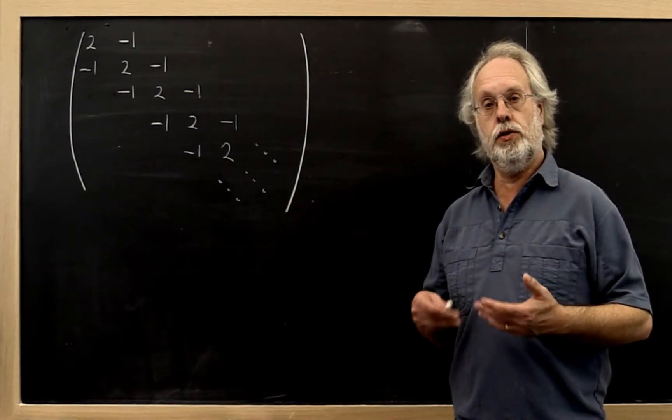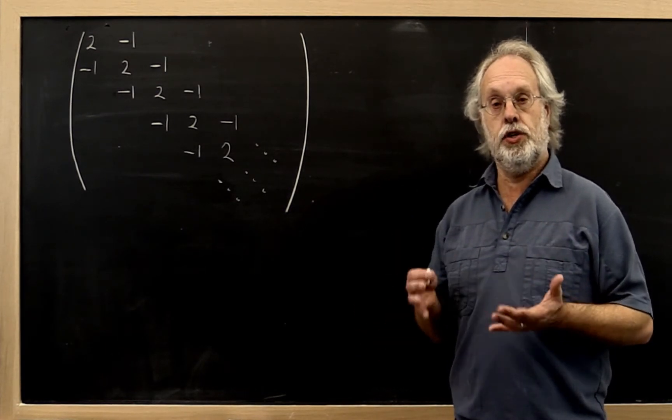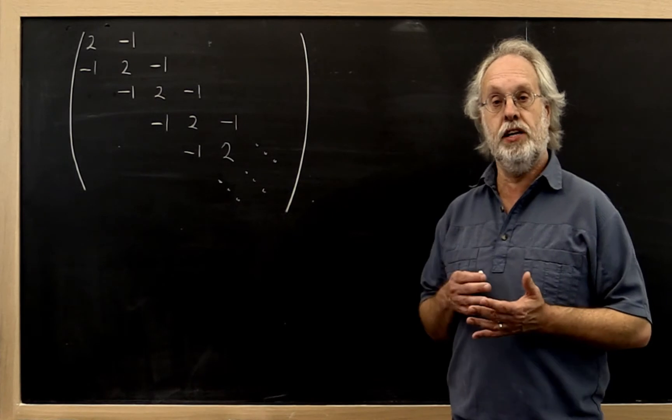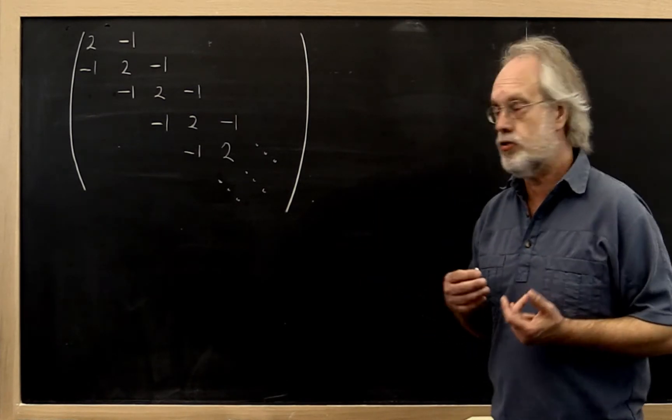In the launch for this week, we talked about Poisson's equation in two dimensions, and we showed that led to a matrix that had a very characteristic structure.